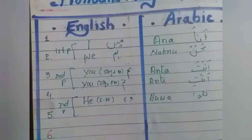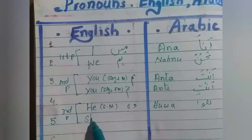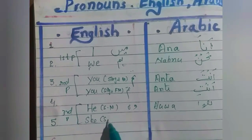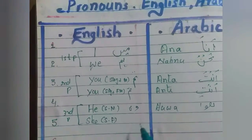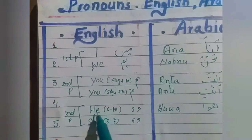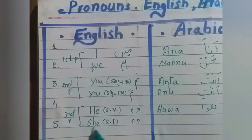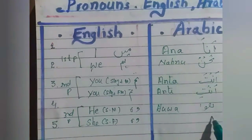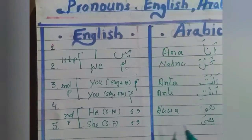Next word is third person singular female — 'she'. In Urdu: 'wo' or 'yeh', used for female. In Arabic it is 'hiya'.